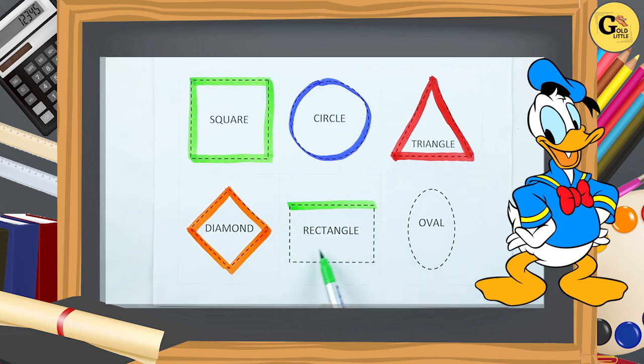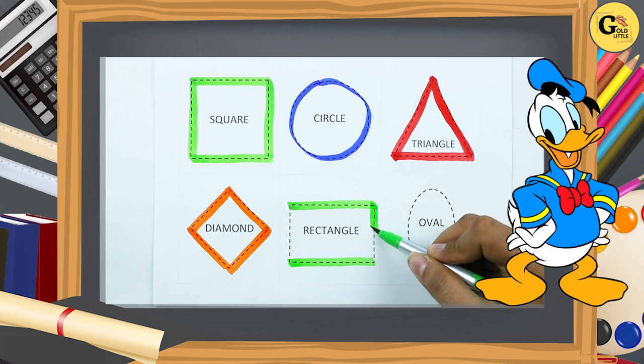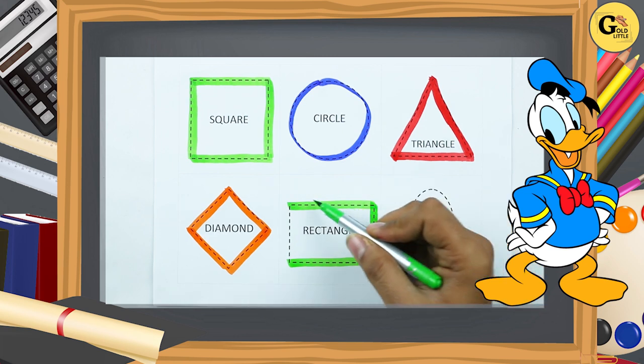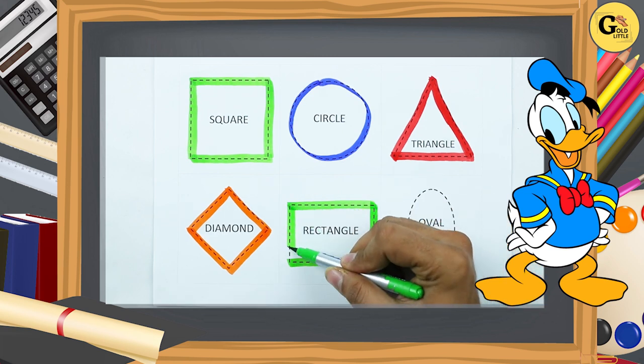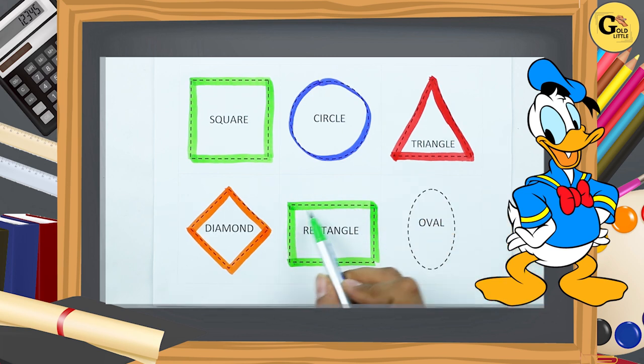One slipping line, two slipping line, one standing line, one standing line. It's a rectangle with green color.